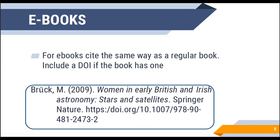For ebooks, you can cite them the exact same way as a regular book. You can see an example below: we have our author, our date of publication, followed by the title of the book, and the publisher — which in this example is Springer Nature. This one had a DOI, so you can see what that DOI looks like: HTTPS followed by an alphanumeric character set.